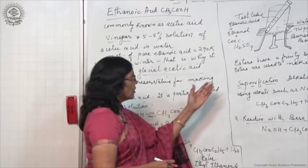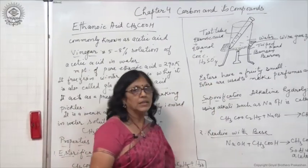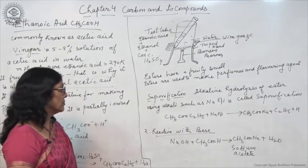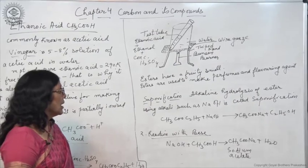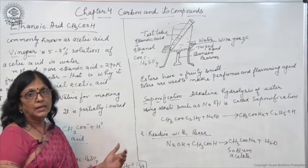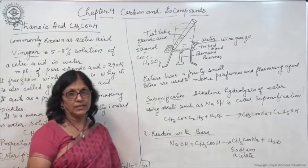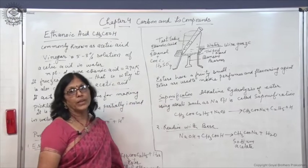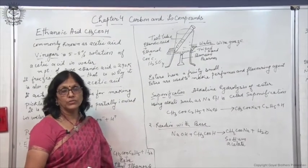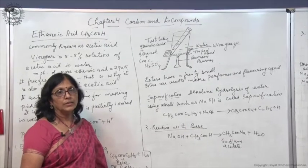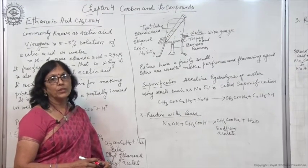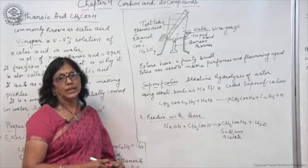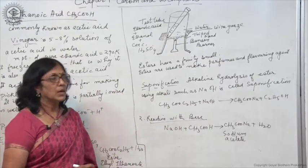Because esters have a fruity smell, they are used to make perfumes and flavoring agents. If alkaline hydrolysis of esters is done, then sodium salt of the carboxylic acid is obtained and the alcohol is obtained. The process is called saponification.